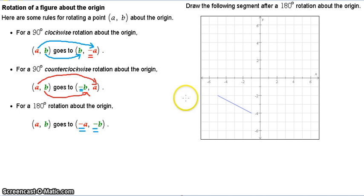So, on the right, you can see that I have a graph and the question wants us to draw the following segment after 180 degrees rotation. After 180 degrees rotation. So what we do is, we can pick two points. I am going to go for this point right here and that point right there. So this point is, let me see, this is negative 5 and negative 2. Over here, this is negative 1 and negative 4.